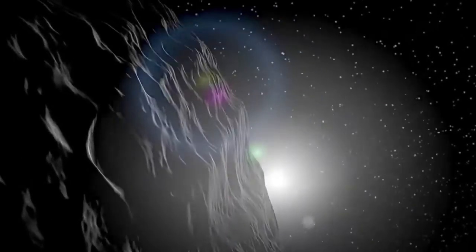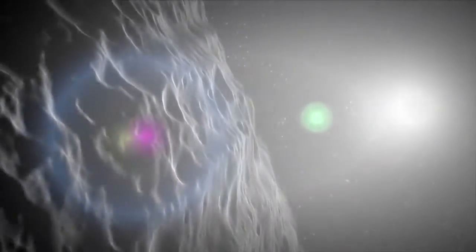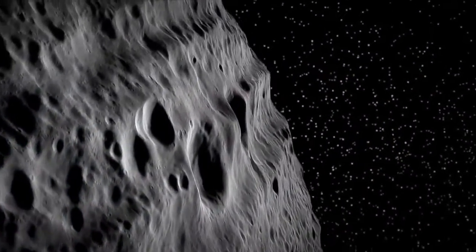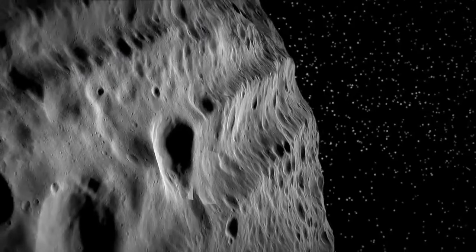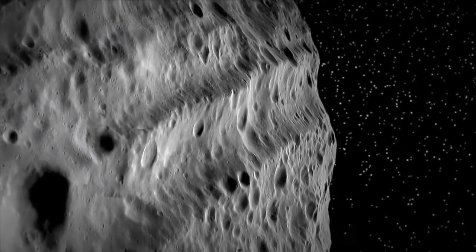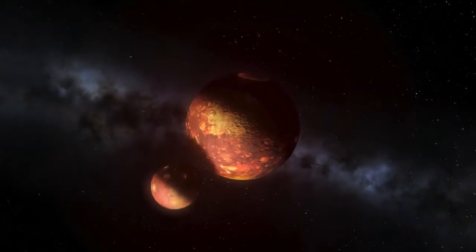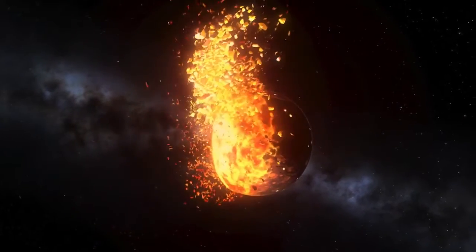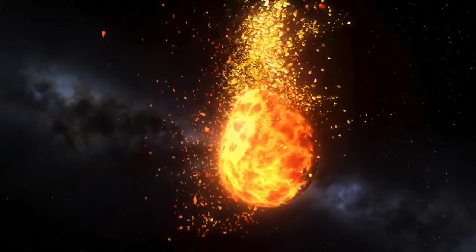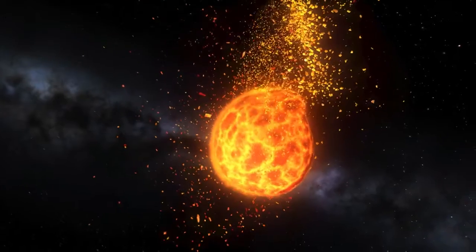In contrast, the asteroids are leftover fragments of the planet formation process and have been sitting out in the solar system for the past four and a half billion years relatively undisturbed. By studying these objects, we're really able to peer back into the past and understand what the conditions were like as planets were forming, both chemically and physically.